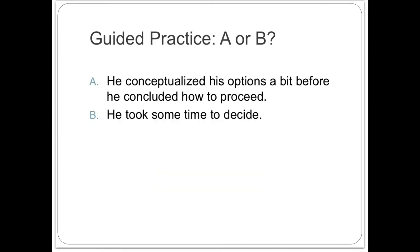Let's practice by choosing which sentence, A or B, has the better word choice because the words are correctly used. Pause the video to read the choices and restart when you are finished. Letter B is a far more effective sentence because, though there are no big words here, each word in the sentence is used correctly. Letter A has poor word choice because, besides being too wordy, 'conceptualized' is used incorrectly.